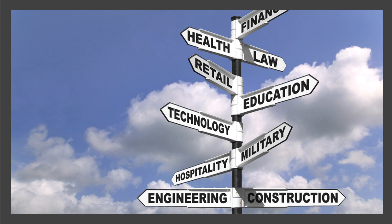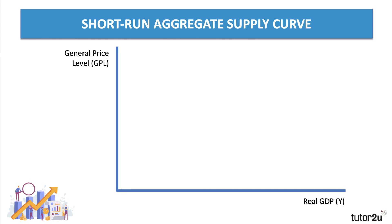Aggregate supply means the total volume of goods and services produced within the macroeconomic system. A significant minority of students use incorrect labeling on their diagrams in macroeconomic questions. It's really important that you label your AD/AS diagrams with the general price level on the y-axis rather than just 'price' as in micro, and with real GDP or real national output on the x-axis rather than simply 'quantity'. We also use the letter Y for income as our short-term label on the x-axis rather than Q.